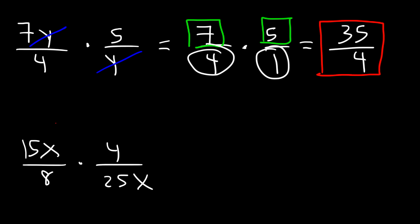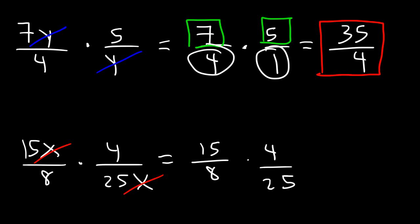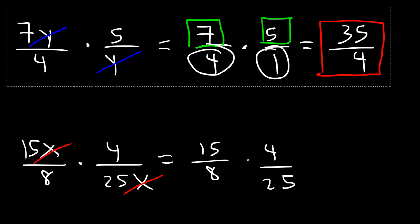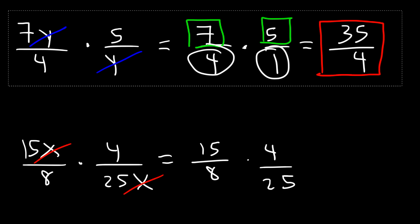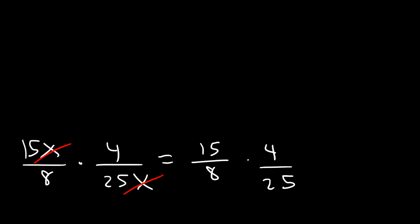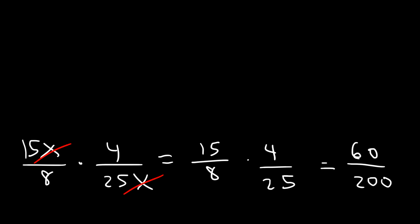For the second example, we can cancel the x variable just like before, so we're left with 15 over 8 times 4 divided by 25. We can choose to multiply across, but we're going to get big numbers — 15 times 4 is 60, and 8 times 25 is 200 — and then we'd have to reduce. So sometimes it's better to simplify before you multiply.